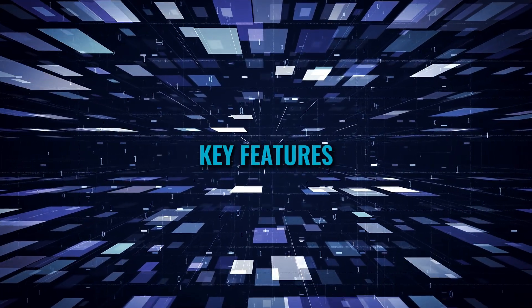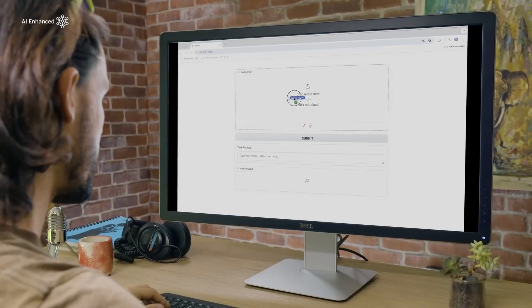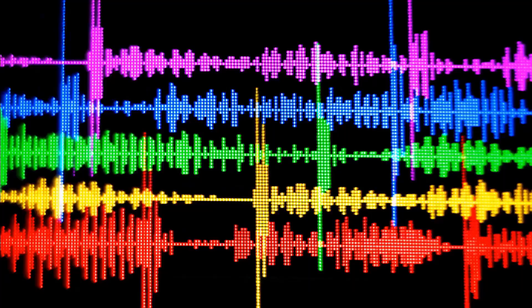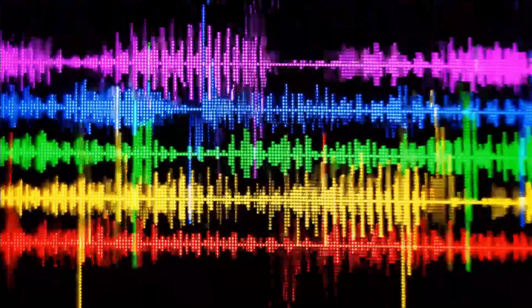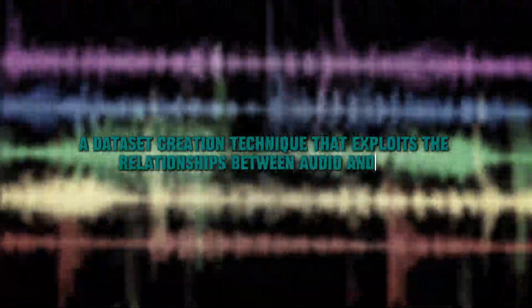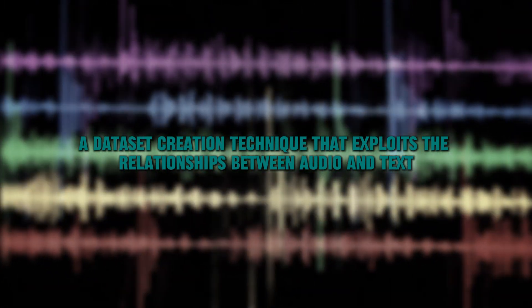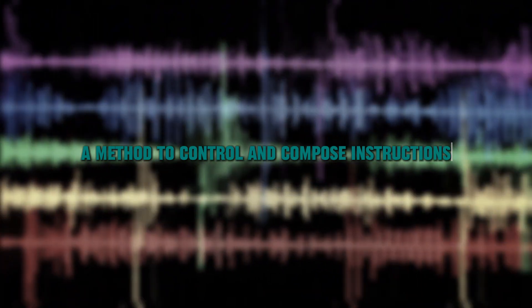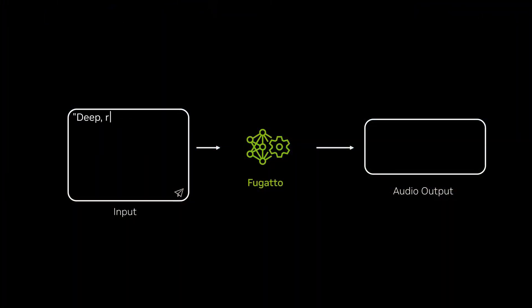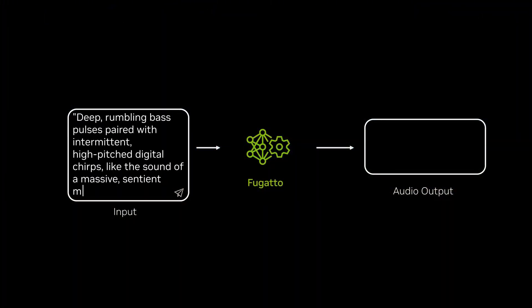Key features. Fugato is a complete framework for audio synthesis to transformation — it can do it all, and all it needs is a text instruction and optional audio inputs. This framework includes two things: a dataset creation technique that exploits the relationships between audio and text, and a method to control and compose instructions. Fugato can bring any of your creative fantasies to life — not as a replacement for your creativity, but as an instrument to broaden your imagination.